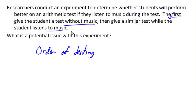Now, if we could do this study, the way to control or take care of that confounding would be to have half the students do it without music first, then with music, and then the other group do it in the reverse order. That way, we could see if the order was having an effect.